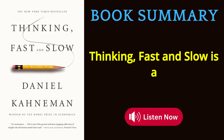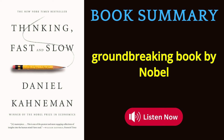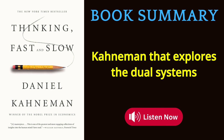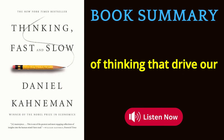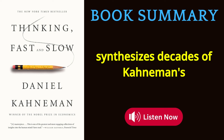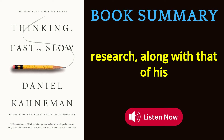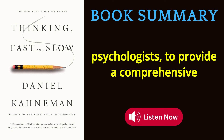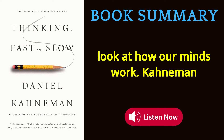Thinking, Fast and Slow is a groundbreaking book by Nobel Prize-winning psychologist Daniel Kahneman that explores the dual systems of thinking that drive our decision-making processes. The book synthesizes decades of Kahneman's research, along with that of his collaborator Amos Tversky and other psychologists, to provide a comprehensive look at how our minds work.